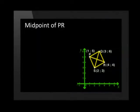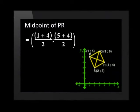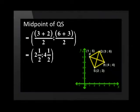So the midpoint of P, R will have an x-coordinate of 1 plus 4 divided by 2, and a y-coordinate of 5 plus 4 divided by 2. That's going to be 2 and a half, 4 and a half. And if we do the same for Q, S, we find the midpoint of Q, S is also 2 and a half, 4 and a half.